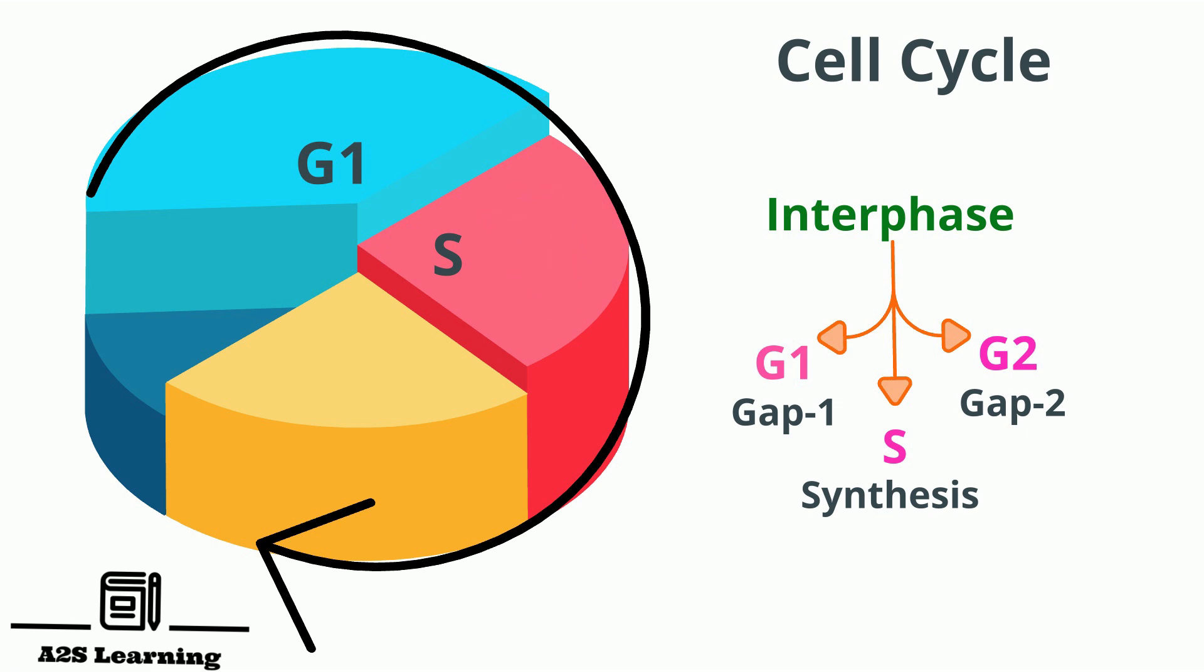The G2 phase is the last phase of interphase and lasts for 4 to 6 hours. During this phase, the cell growth continues.